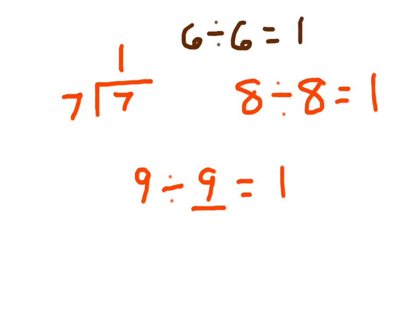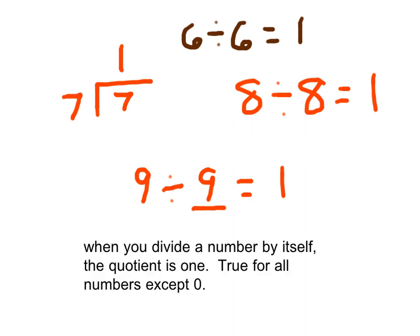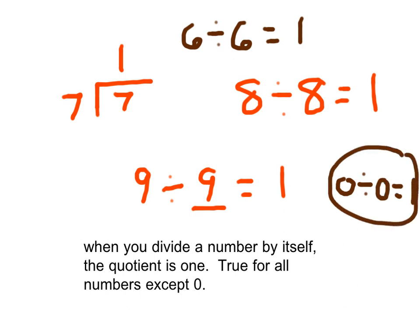All of these are the same rule: when you divide a number by itself, the quotient is 1. And it's true for all numbers except 0, because remember, you can't divide by 0. You cannot write 0 divided by 0 equals 1 — that does not work because you cannot have 0 as a divisor.